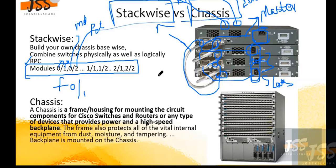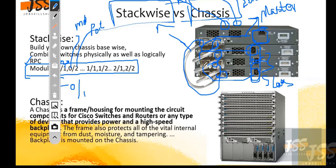So if it shows the second part of the module, that's actually the second switch or third switch, however they designed it. This way you would know — as an engineer — that machine on floor three, machine number 56, is on that particular switch because you can see it in the module number. That's how you track things.